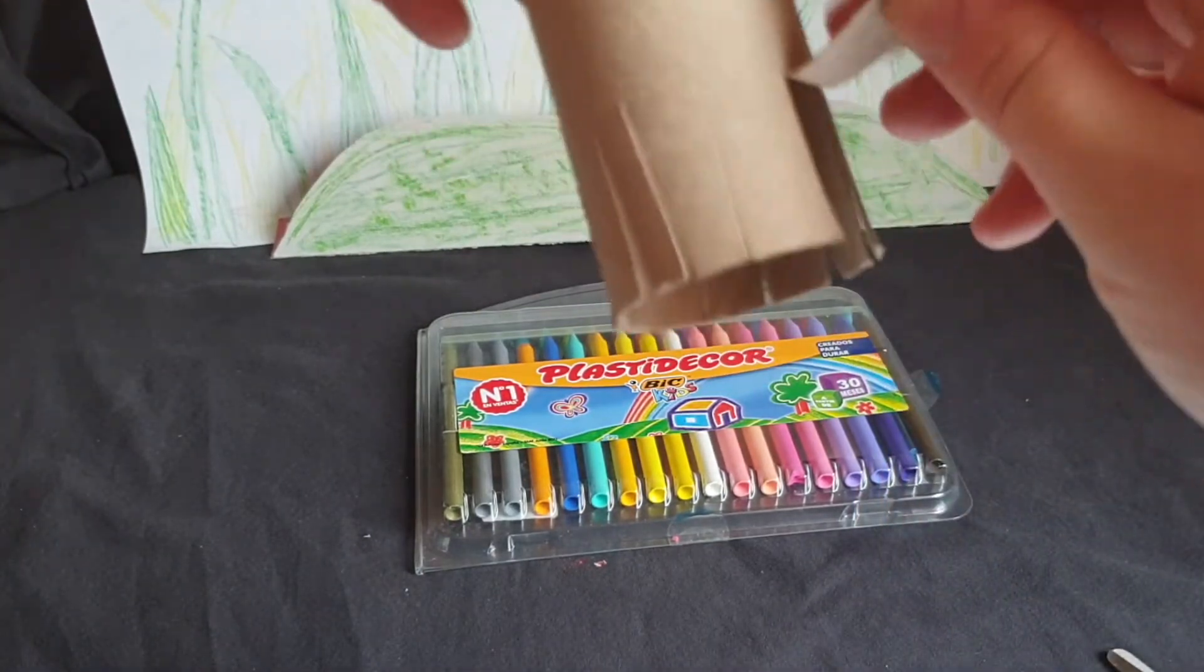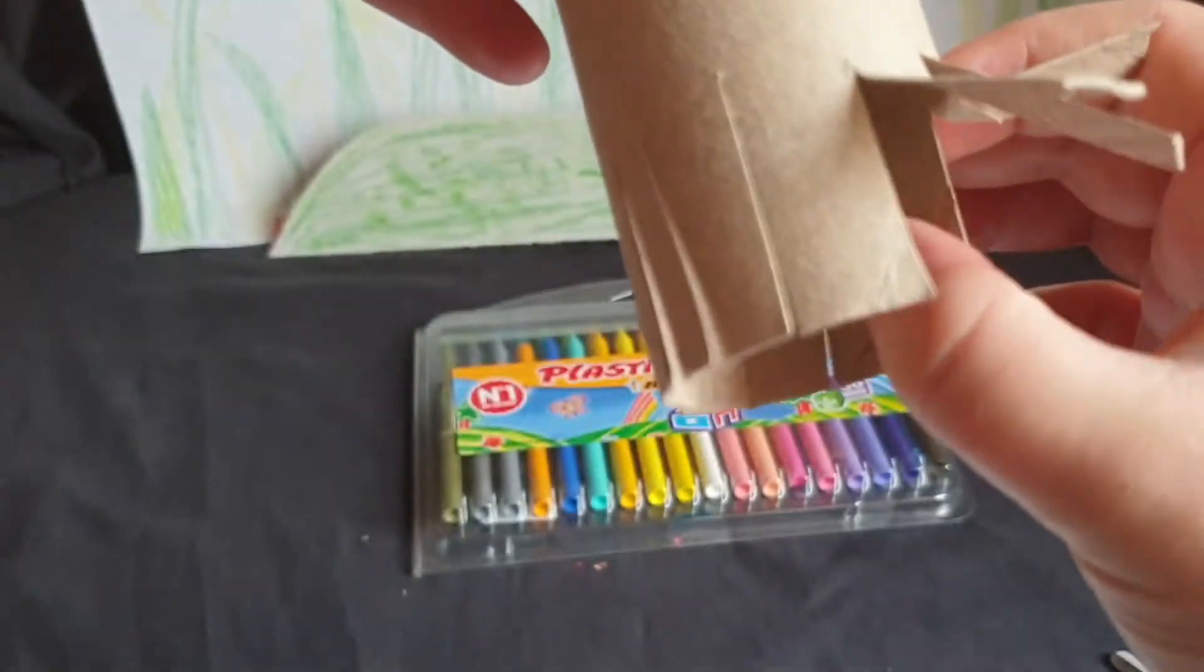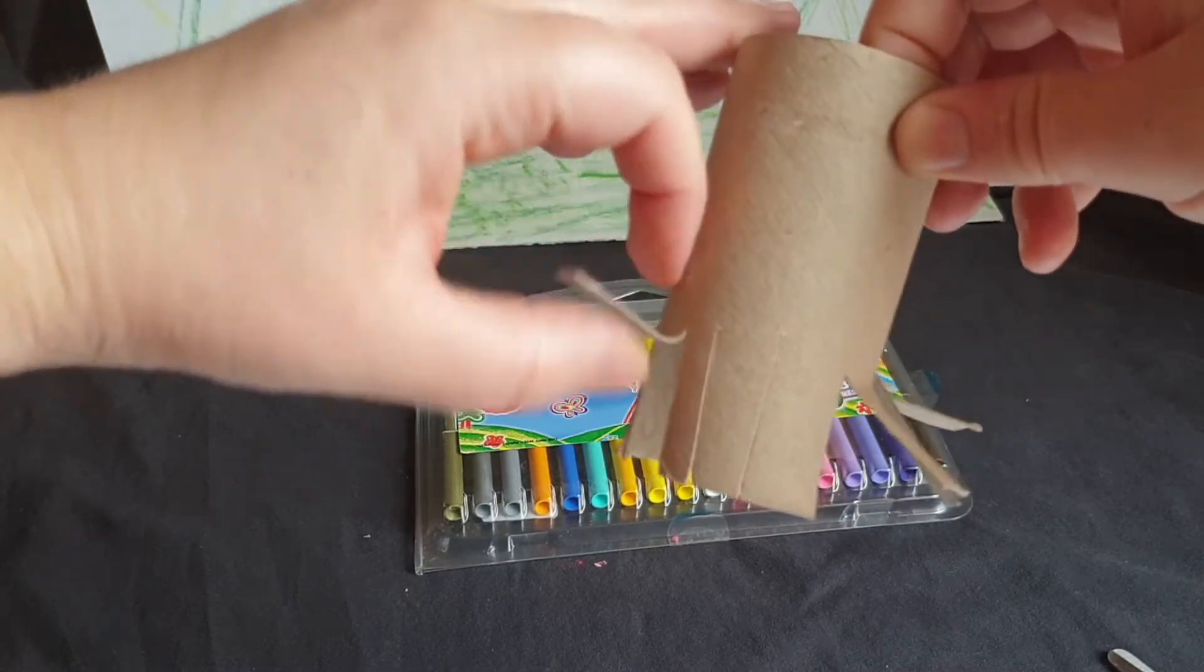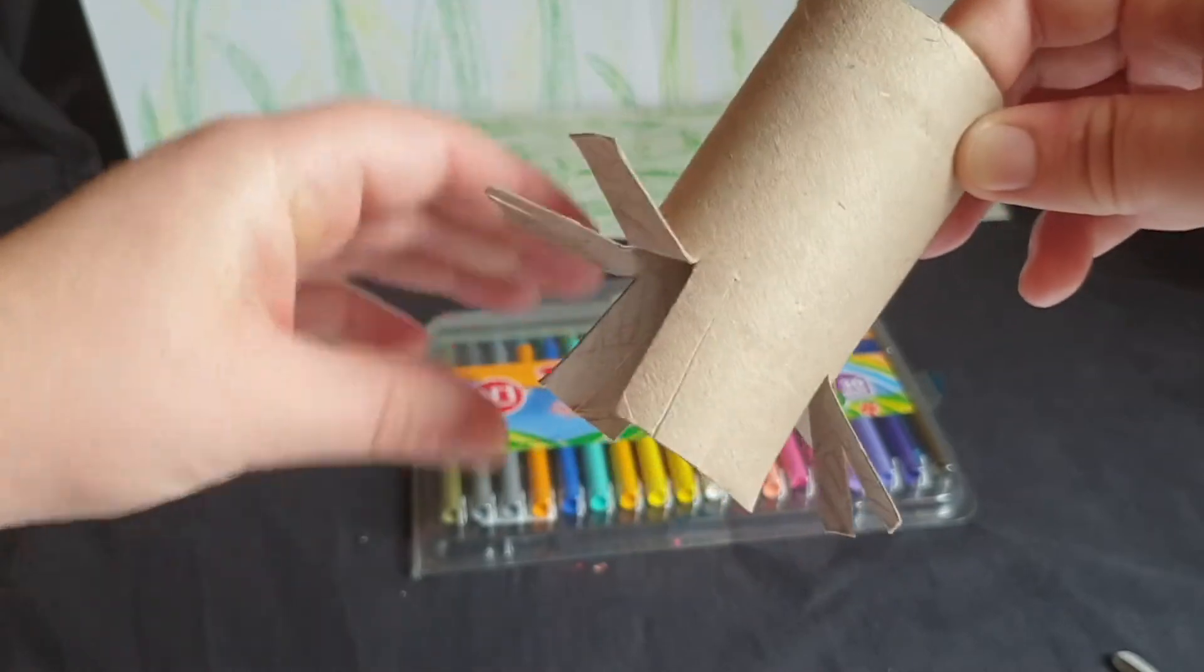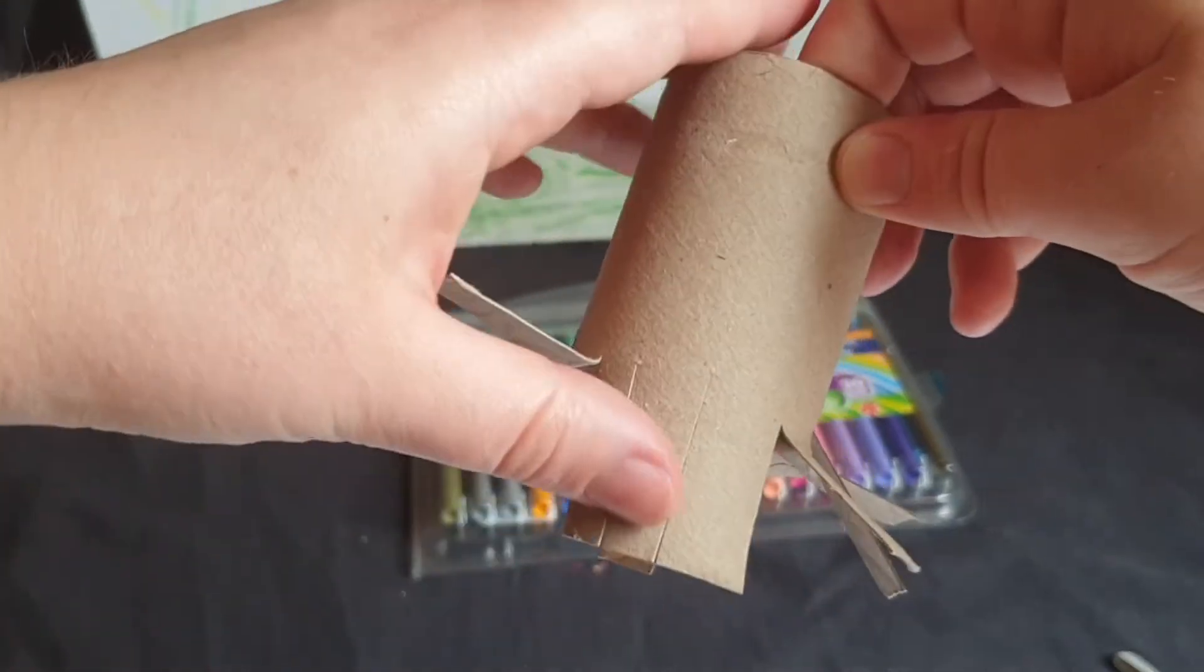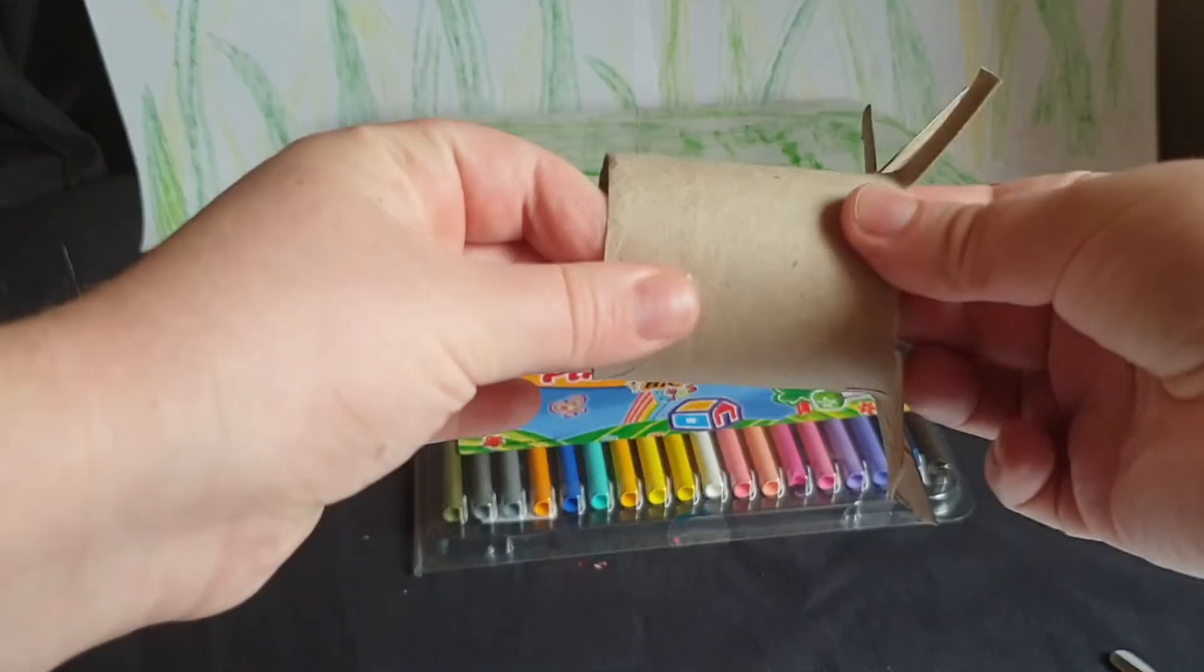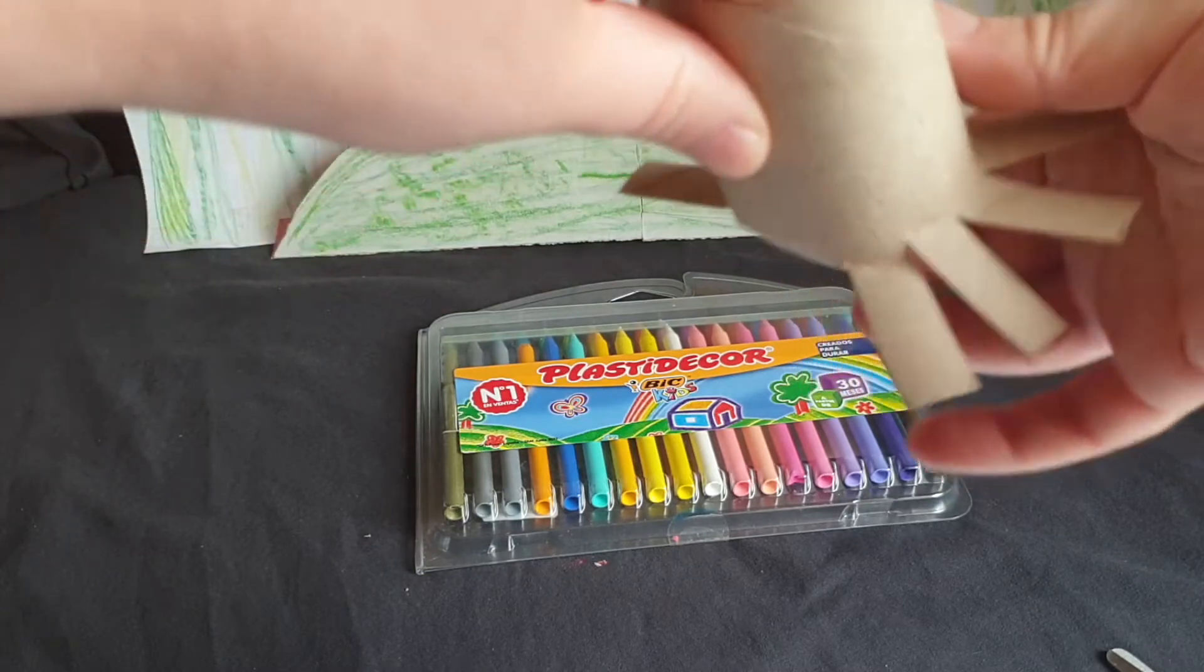Fold out four strips on each side of the roll. One, two, three, four. The rest of the strips can be folded in. Now your spider has legs.